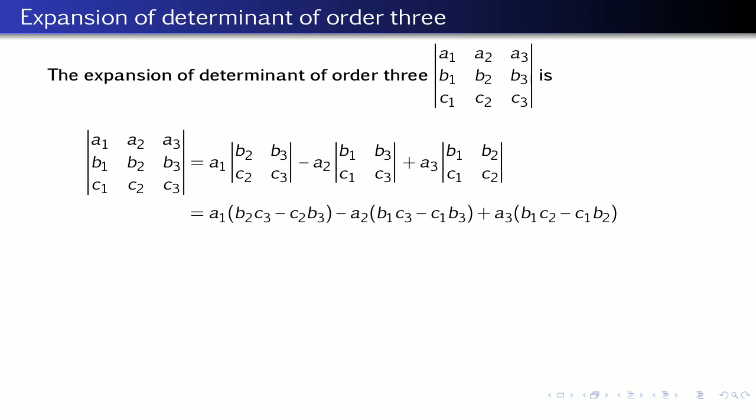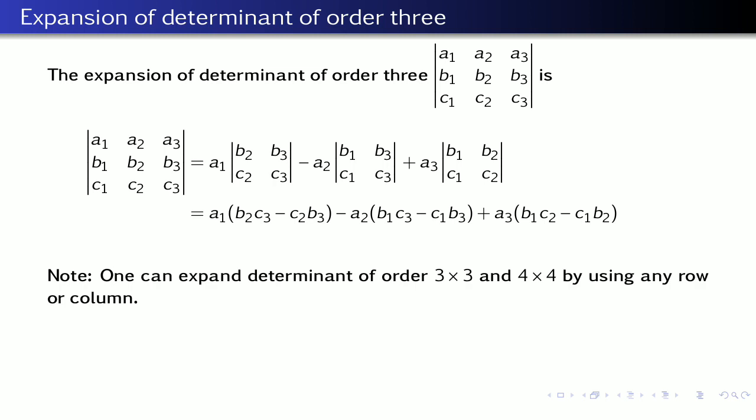We need the signs for any row and any column. For the first row we know signs are plus, minus, plus. Just write alternating plus and minus signs column-wise or row-wise and you will get the signs for a 3×3 determinant. In the first column signs are plus, minus, plus.